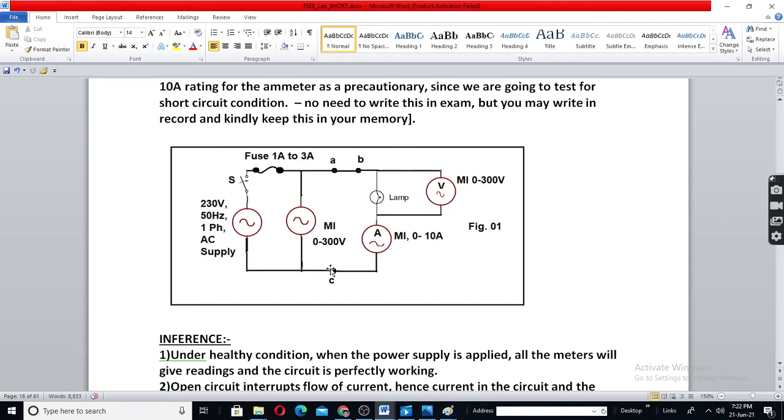As soon as you short the load, what happens is, very high current will flow like this. Fuse will get burnt. Ammeter will show 0 because current will flow like this. Current will not flow through ammeter now.